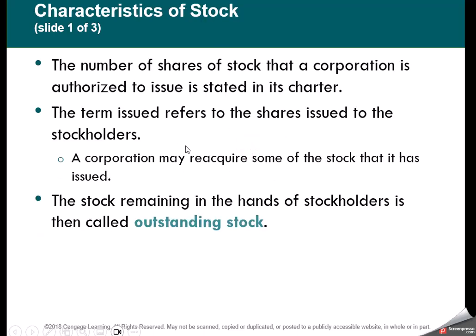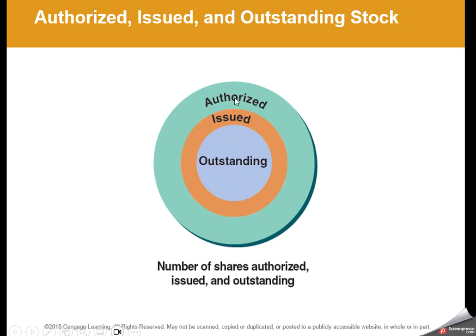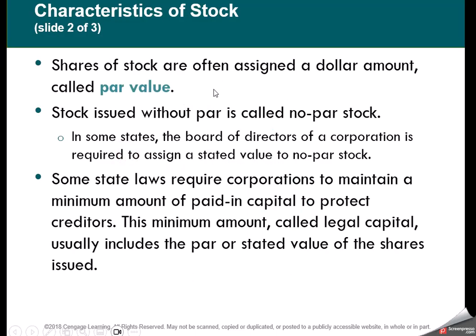Companies that are publicly traded issue stock — they will definitely have common stock and may have preferred stock. Anything issued and still in the hands of stockholders is called outstanding stock. Authorized shares are ones they're allowed to sell, but they don't have to sell them all. Authorized is how much we're allowed to sell, issued is what we have sold, and outstanding is what is still in the hands of current investors. Shares are issued at par value — normally a small amount like $1 or $5 — called their legal capital. It could also be a stated value instead of par value.